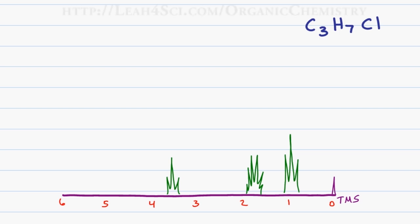In this problem, we are provided with an NMR graph and the molecular formula for the molecule which is C3H7Cl. Given that this is such a simple formula, we can actually guess at the correct molecule by finding the isomers.